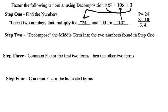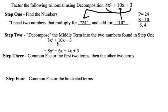So I am going to take my original 8x squared plus 10x plus 3, and I am going to decompose the middle term into the two numbers found in step 1. You can see here that 10x becomes 6x plus 4x — I've split those into two pieces. The order does not matter; the technique will still work even if you reverse them.